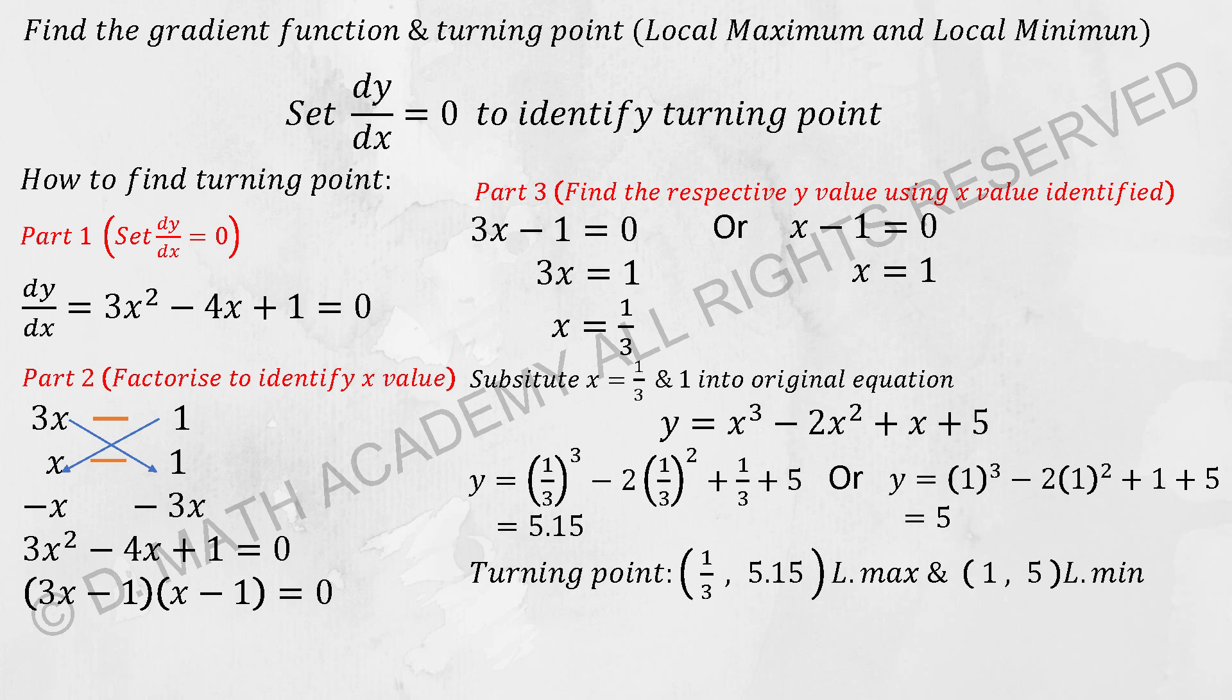Then substitute this into the original equation that we had at first. You will get your turning point for y when x equals 1 over 3 as 5.15, and when x equals 1, your y will be 5.